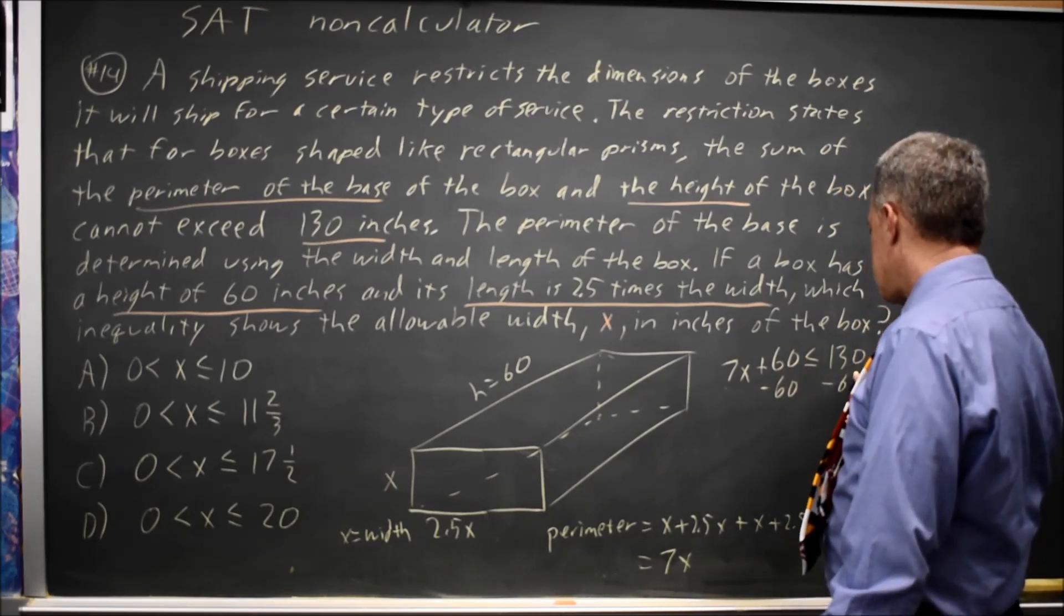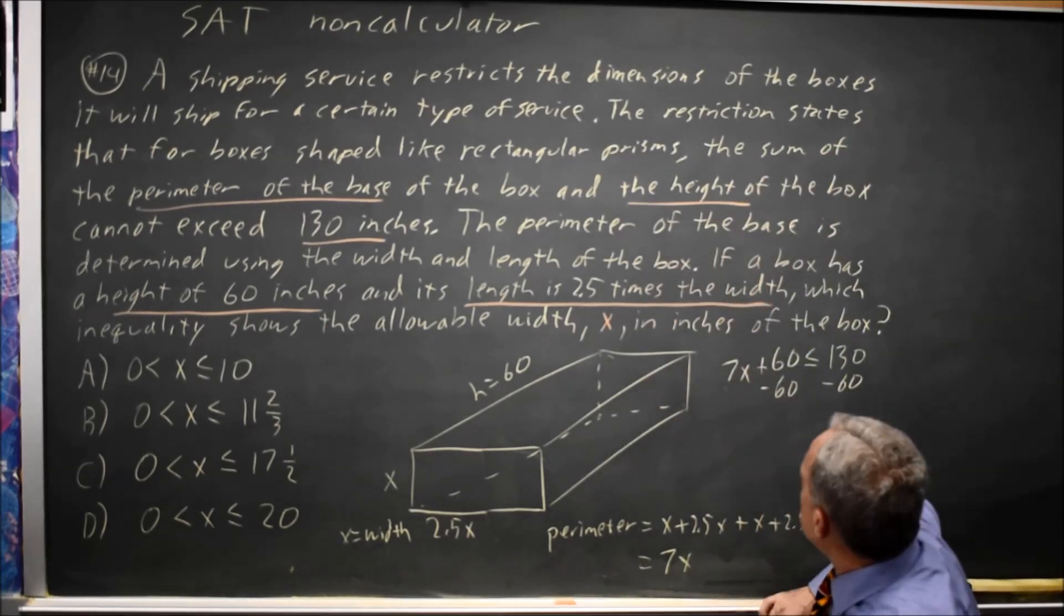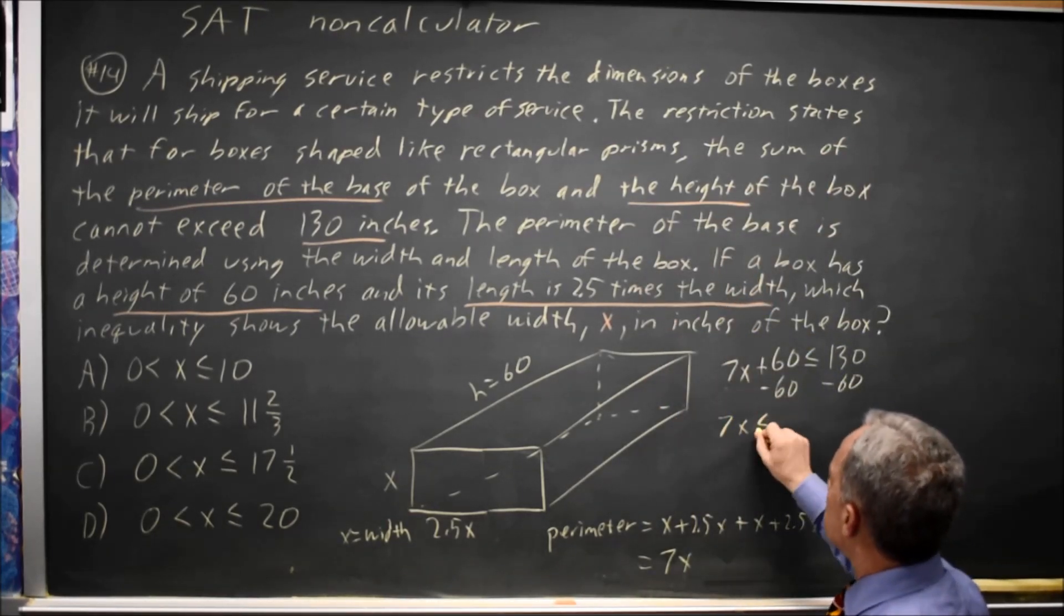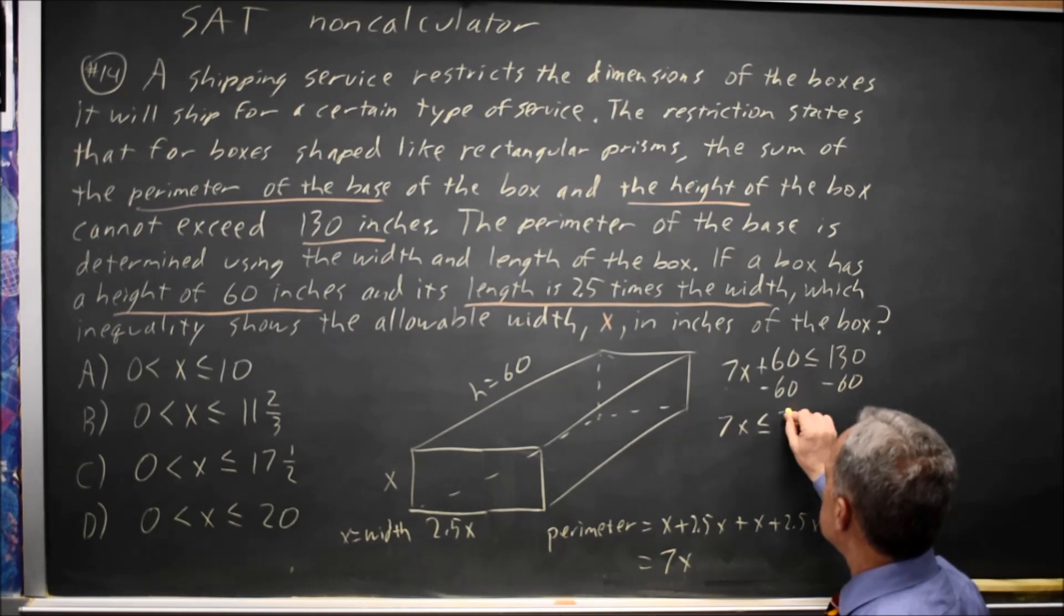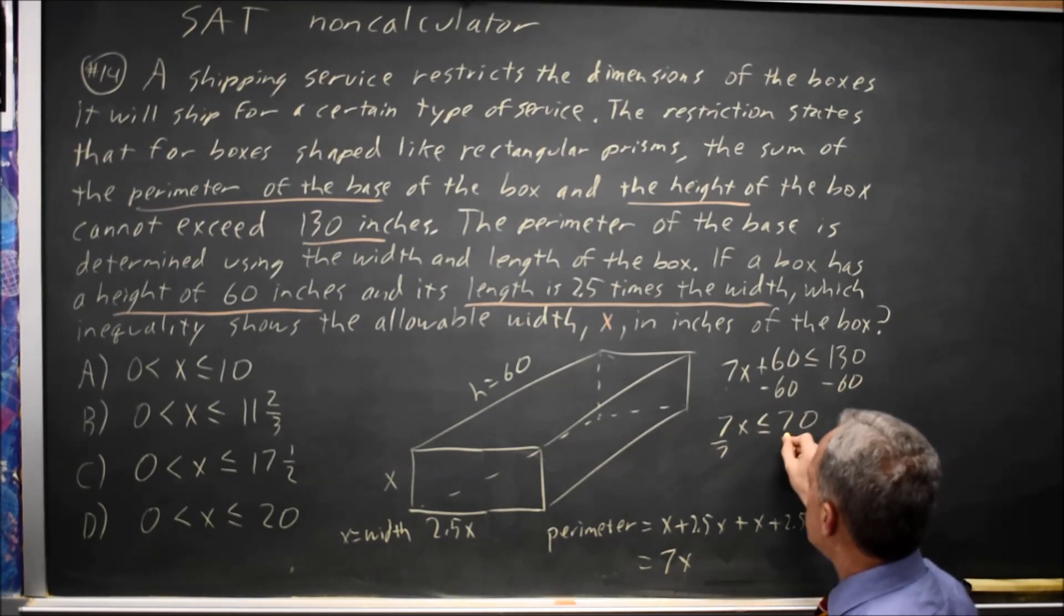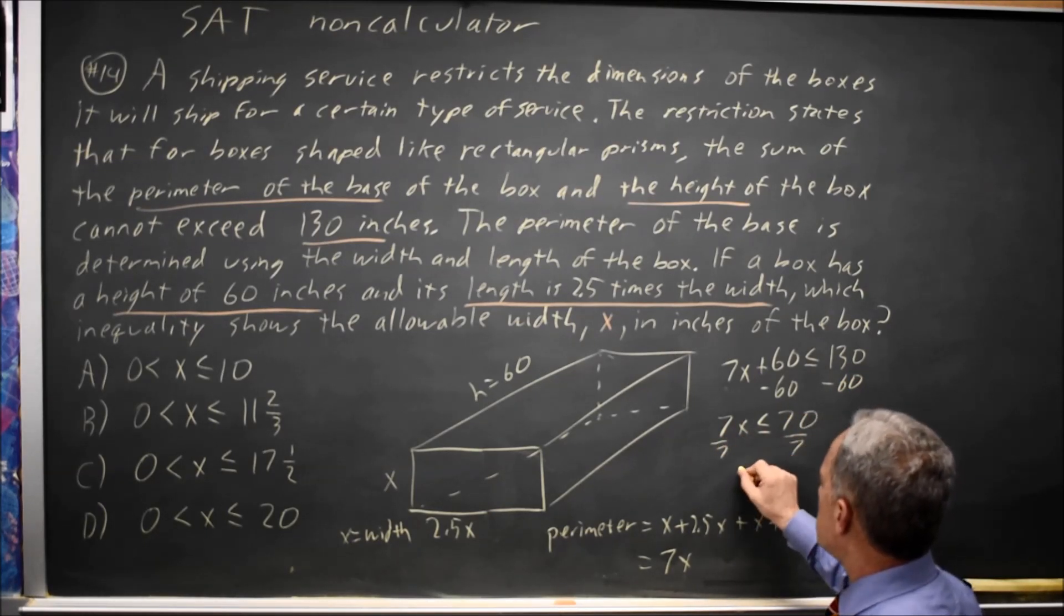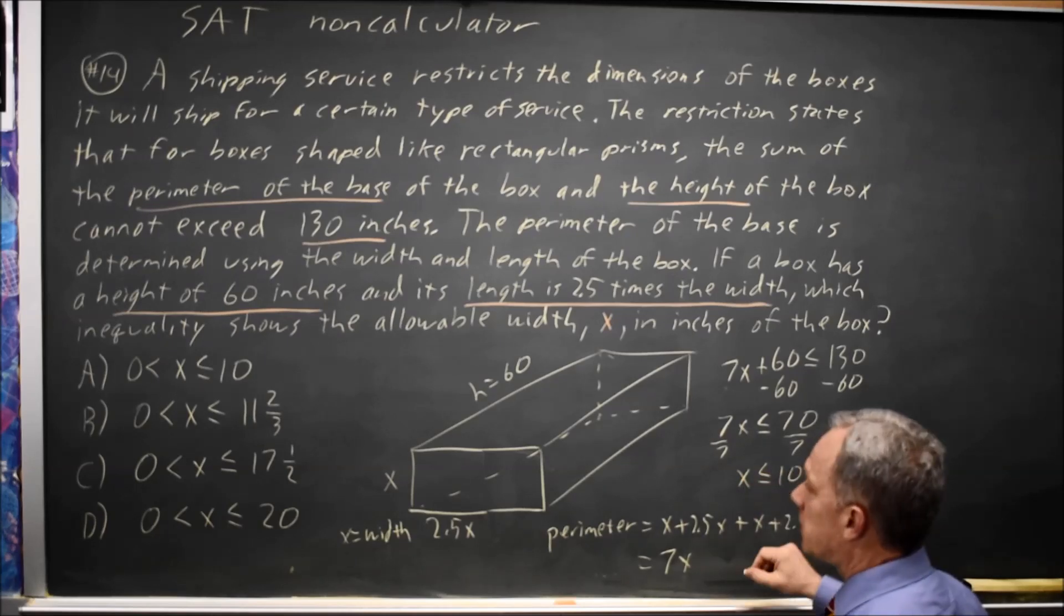Subtract 60 from both sides and I get 7x less than or equal to 130 minus 60 is 70. Divide both sides by 7 because I always do the same thing to both sides of the equation. x less than or equal to 10.